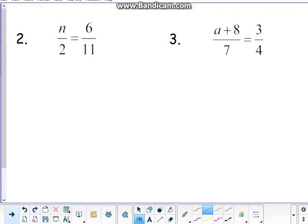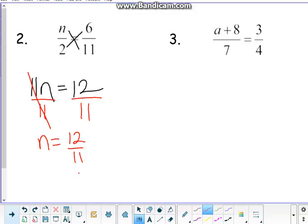So the next one's a very simple proportion. Even though we have a variable in the numerator, we want to try and get rid of the fractions to make this a little bit easier. So let's go ahead and do cross multiplication again. n times 11 is 11n. 2 times 6 is 12. And then we are going to get rid of that 11 by division. It goes away, and we are now left with n equals 12 over 11.